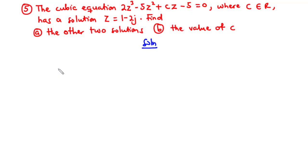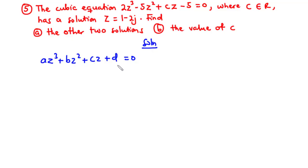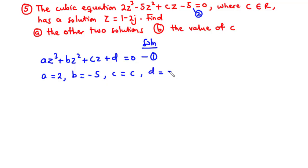To solve this question there are two important things we need to know. The first is the relationship between the coefficients and the roots of a cubic equation. The general form is az³ plus bz² plus cz plus d equals 0. Comparing with our equation, we have a equals 2, b equals negative 5, c equals c, and d equals negative 5.